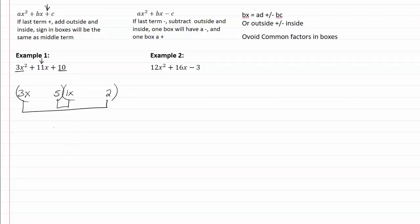So that would give me my outside now is 6x and my inside is a 5x. 6 and 5 add up to be 11x, which is just what I want. Here's the nice thing about the last sign being a positive, which is what we have here.